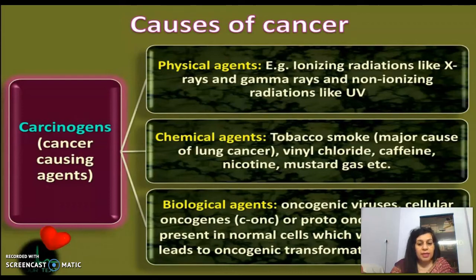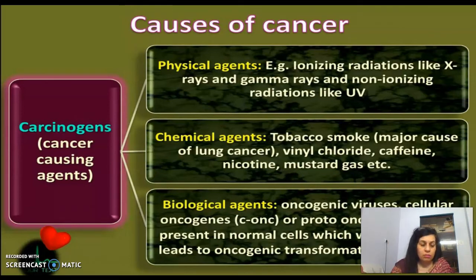Proto-oncogenes and cellular oncogenes are normal genes present in cells. When they are activated, they lead to the oncogenic transformation of cells. Physical, chemical, and biological agents that cause cancer are collectively termed carcinogens — cancer-causing agents.